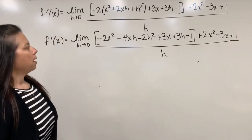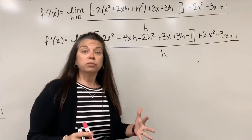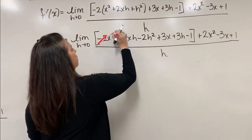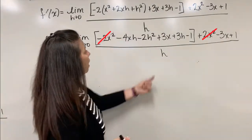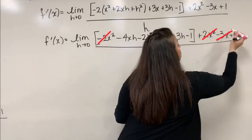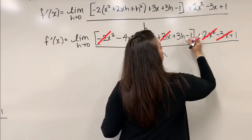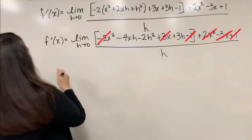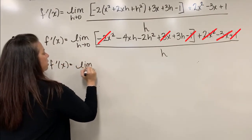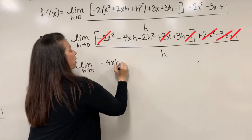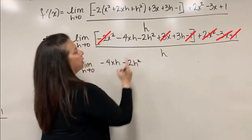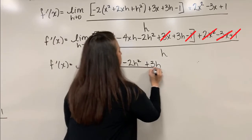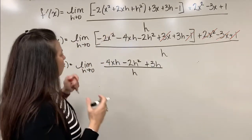Hopefully you notice there are terms that combine and others that subtract out. The negative 2x squared cancels with the 2x squared, the positive 3x cancels with the minus 3x, and the negative 1 cancels with the plus 1. So in the next step, f prime of x equals the limit as h approaches 0 of negative 4xh minus 2h squared plus 3h, all divided by h.